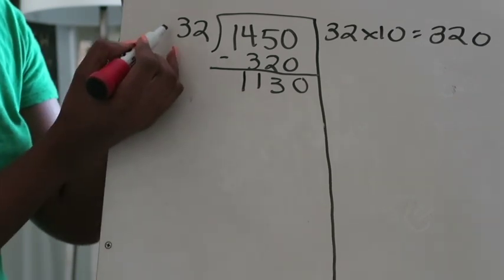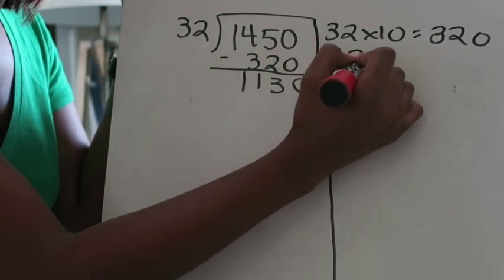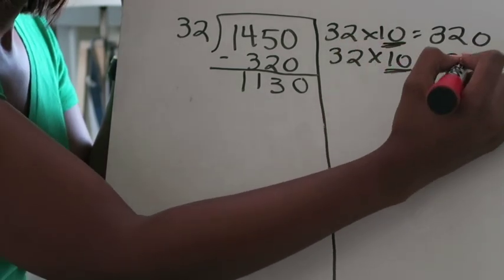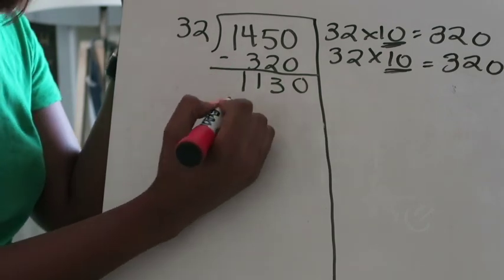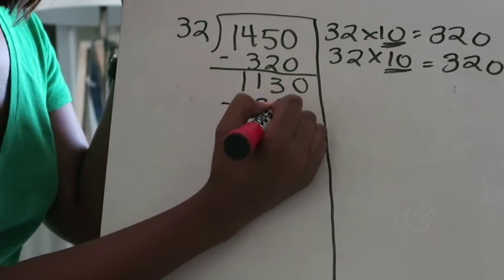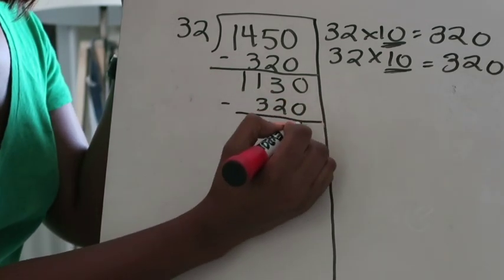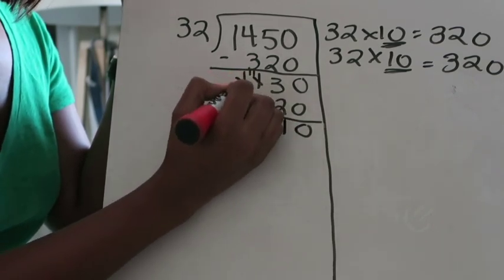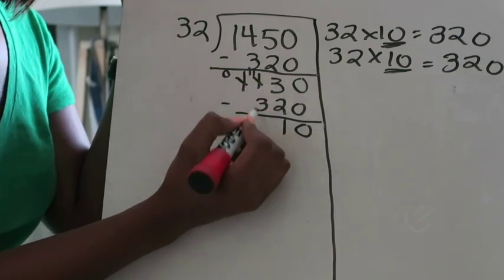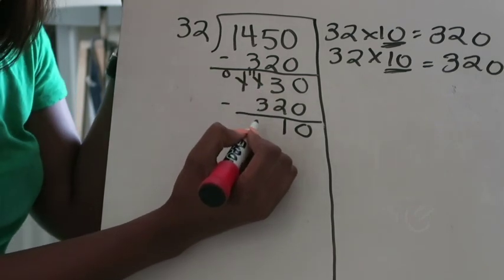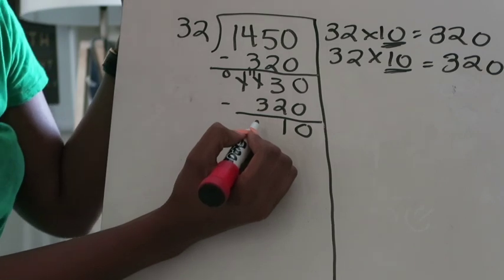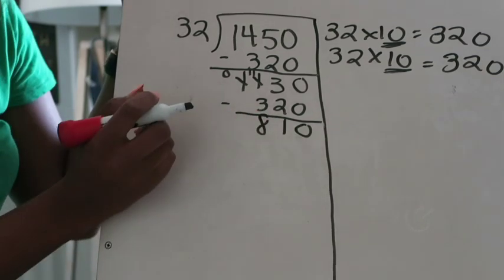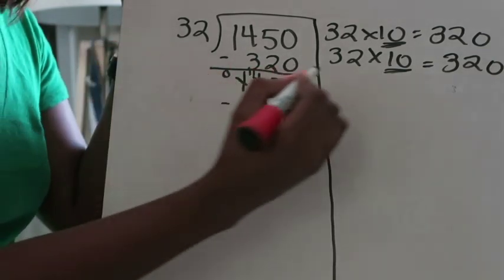I'm going to keep multiplying. 32 times 10, underline that 10—I forgot about that one up there. That's 320. Subtract 320 again. 0 minus 0 is 0, 3 minus 2 is 1. I need to do some regrouping there. That becomes 11. 11 minus 3 is 8. And I'm left with 810. Keep going.